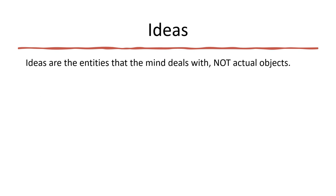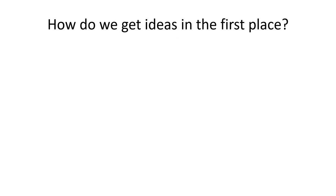Ideas, in short, are the entities that the mind deals with — and that's all it can deal with, not actual objects. When you look at a mountain, you don't gain any weight because you don't have a mountain in mind; you have the idea of a mountain, which is not a mountain. Locke wants to explain what he means by 'we get all of our ideas from experience,' and he follows this in a very systematic way — he's a very well-organized thinker and writer.